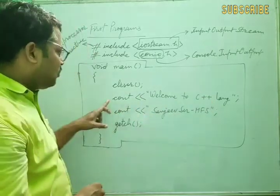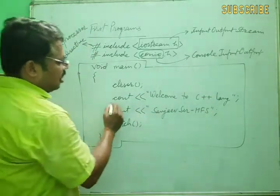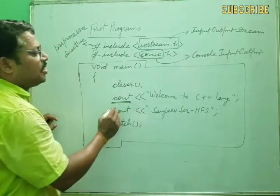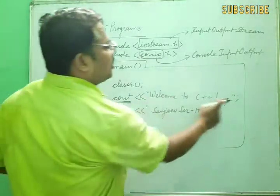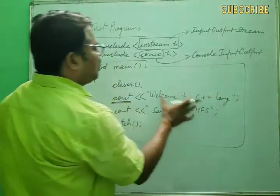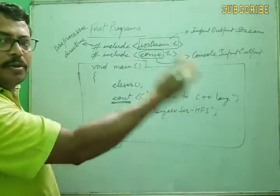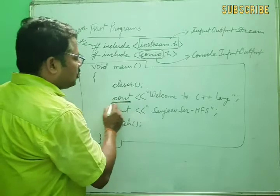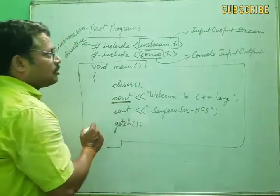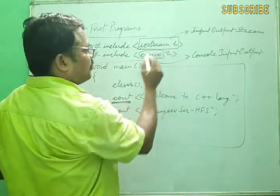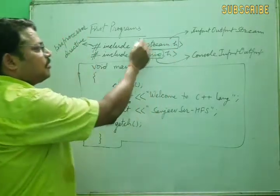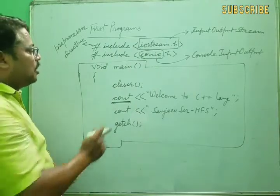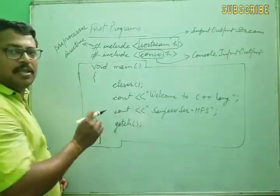Here we use cout. The purpose of cout is to display output — whatever is written in double quotes will be displayed on the monitor screen. That is why cout is used for output operations, and that is why we include iostream for input/output stream operations.